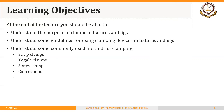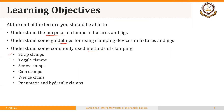At the end of this lecture you should be able to understand the purpose of clamps in fixtures and jigs, some guidelines for using clamping devices, and some commonly used methods and devices of clamping — like strap clamps, toggle clamps, screw clamps, cam clamps, wedge clamps, and power clamping like pneumatic and hydraulic clamps.